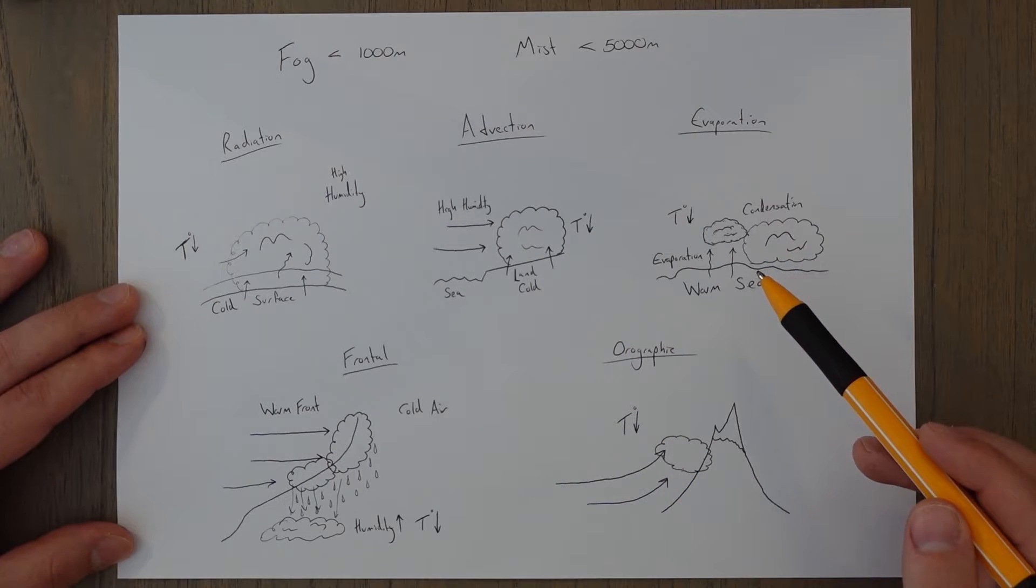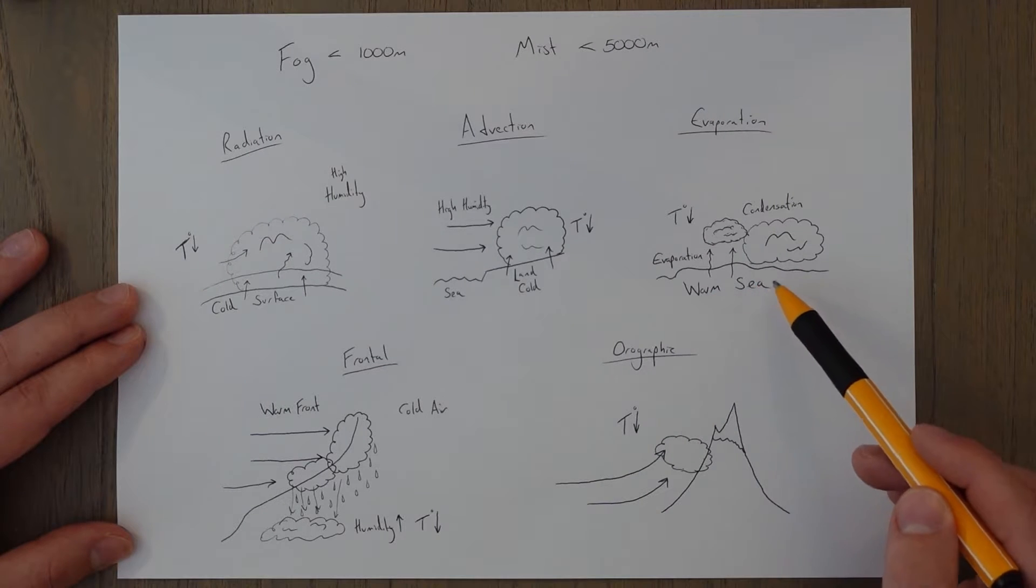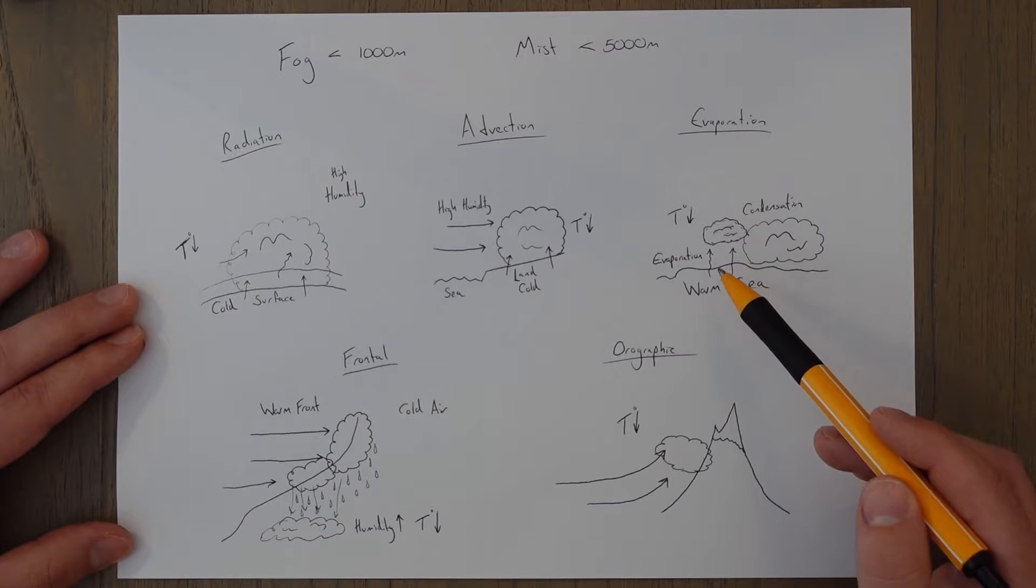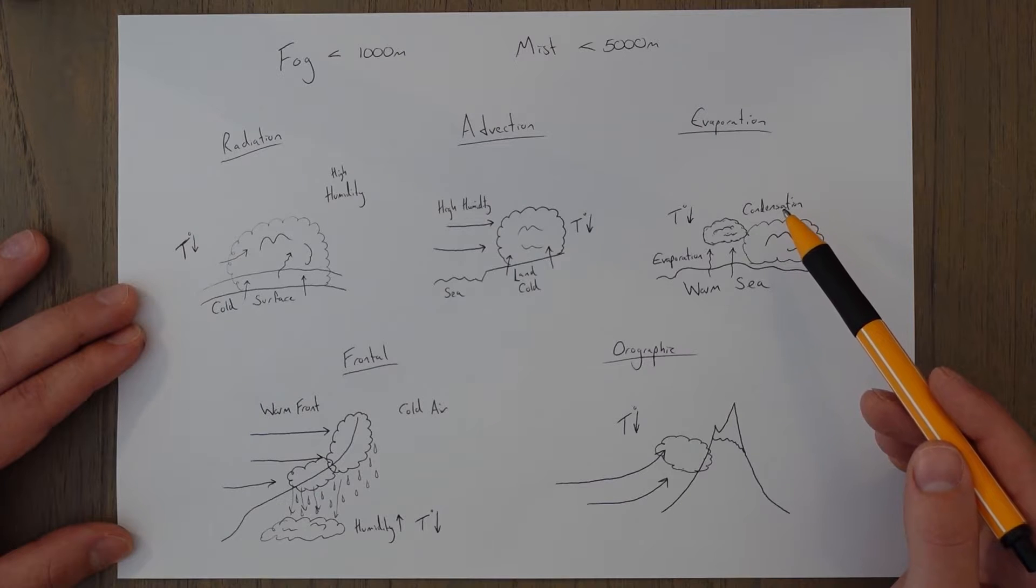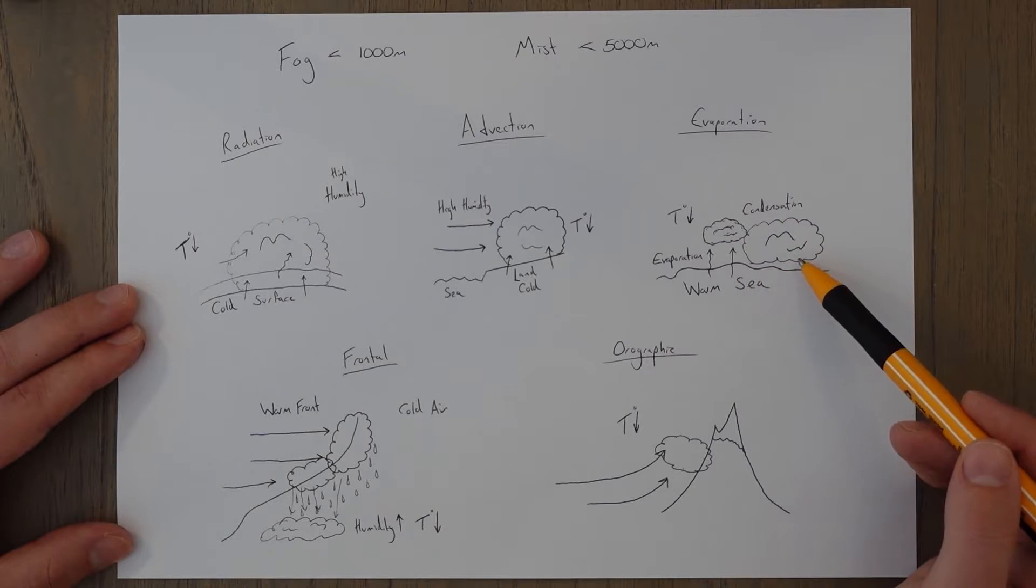Evaporation fog forms when water vapor evaporates. So warm water vapor evaporates into colder air above it, and the colder air above it immediately cools the air back down to below the dew point and the water vapor will condense out to form fog.